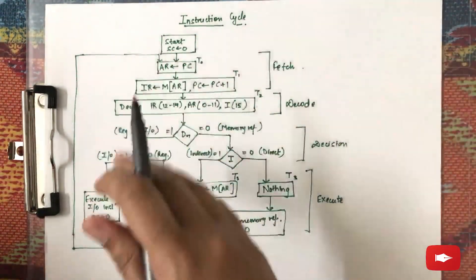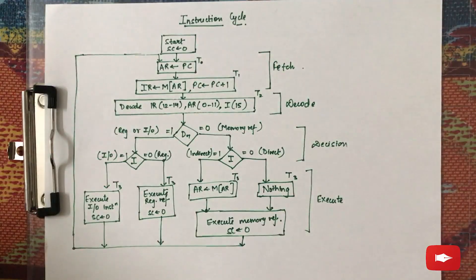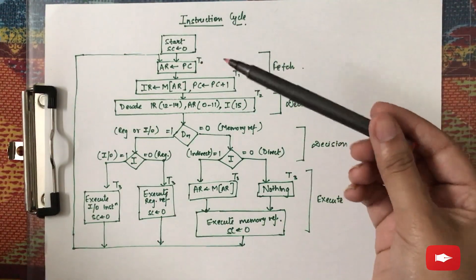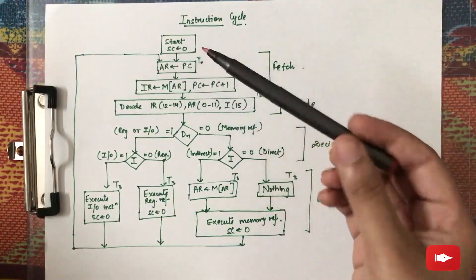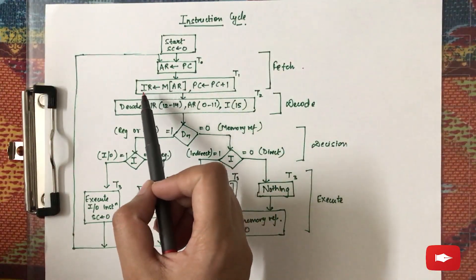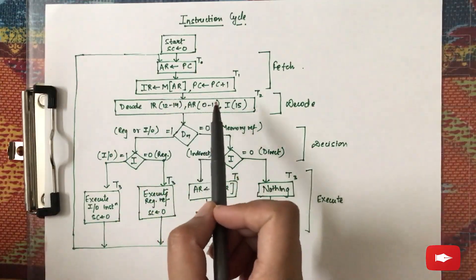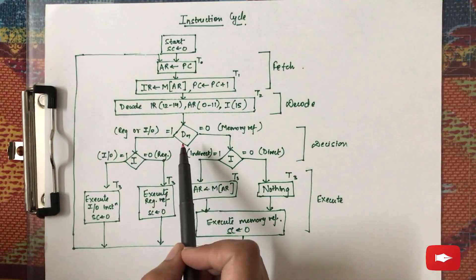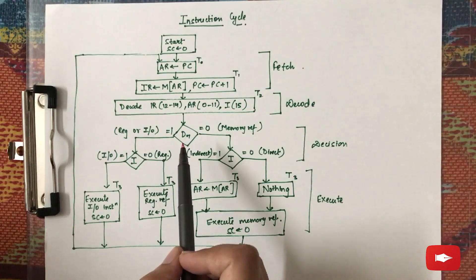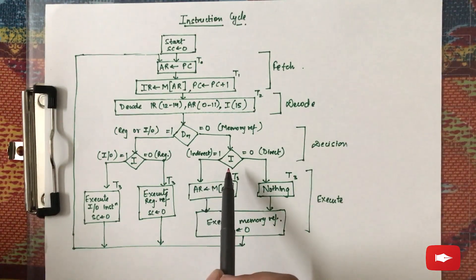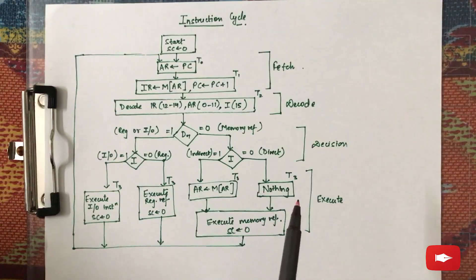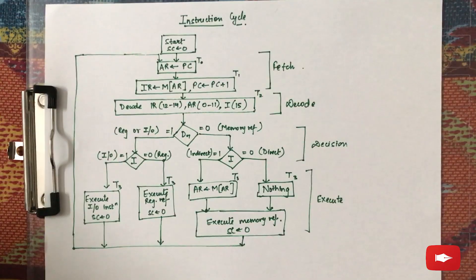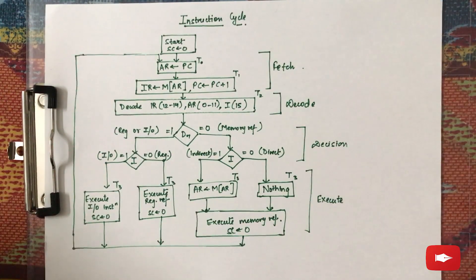We are going to learn about all four phases in detail using a flowchart. Let me brief you on certain abbreviations: AR is the address register, PC is the program counter, IR is the instruction register, D7 is the output of the decoder, and I is the addressing mode bit. The instruction format has three things: address, opcode, and the one bit that defines the addressing mode.